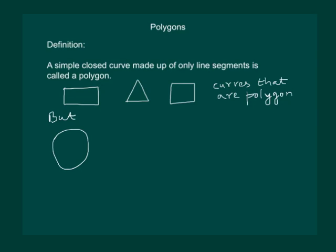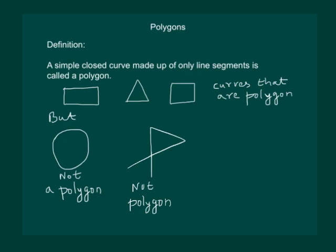But a circle is not a polygon, as although it is a simple closed curve, it is not formed by line segments. Consider a curve like this, this will not be a polygon because this is not a simple curve. It is closed, but it is not simple closed curve because it is intersecting at some other point. This figure is not a polygon because although it is a closed curve, it is not a simple closed curve.